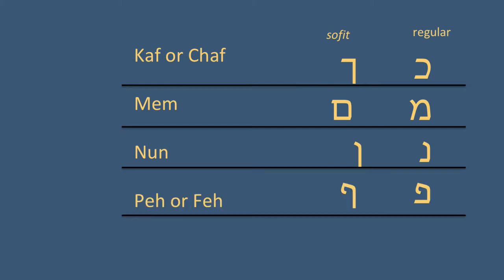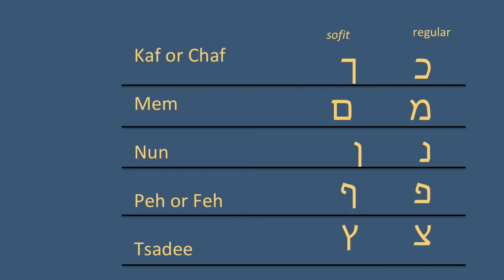Only two more to go. In this screencast we have learned Pe or Fe. When it appears at the end of a word, we have a Pe or Fe Sofit. The Pe Sofit can also take a dagesh to tell you whether it's a Pe Sofit or a Fe Sofit, and this symbol also goes down below the line. And the very final one — we have learned the Tsadi today. When this appears at the very end of a word, it almost looks like a Y, again extending below the line. So this is a Tsadi Sofit.